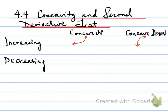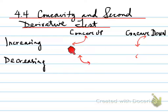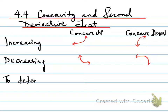A decreasing function that is concave up will look like that — so it's decreasing but concave up. And finally, decreasing and concave down looks like that.